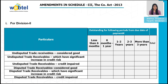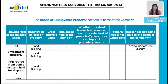Similarly, for Division 2, a trade receivable aging schedule is also required. The next amendment relates to title deeds of immovable property not held in the name of the company. The company shall provide details of all immovable properties, other than properties where the company is a lessee and lease agreements are duly executed in favor of the lessee, whose title deeds are not held in the company's name. Where such immovable property is jointly held with others, details are required to be given to the extent of the company's share.